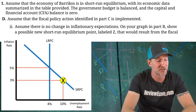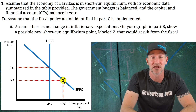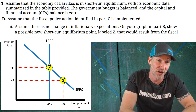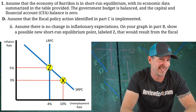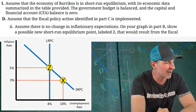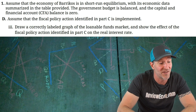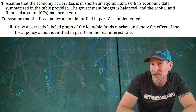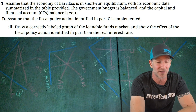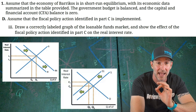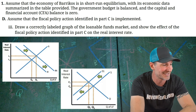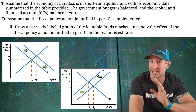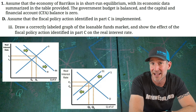Moving on to Part D double-I. Assuming no inflationary expectation changes, on the graph from Part B we show the new possible equilibrium point labeled Z. Any point higher up on that short-run Phillips curve is going to work. For Part D triple-I, we draw a correctly labeled loanable funds market graph showing the impact of the fiscal policy action. Expansionary fiscal policy increases borrowing — that's the crowding-out effect. The Y-axis is labeled real interest rate, the X-axis quantity of loanable funds, with a downward-sloping demand curve and an upward-sloping supply curve. You can either shift demand to the right or supply to the left — either shift works as long as the real interest rate increased.